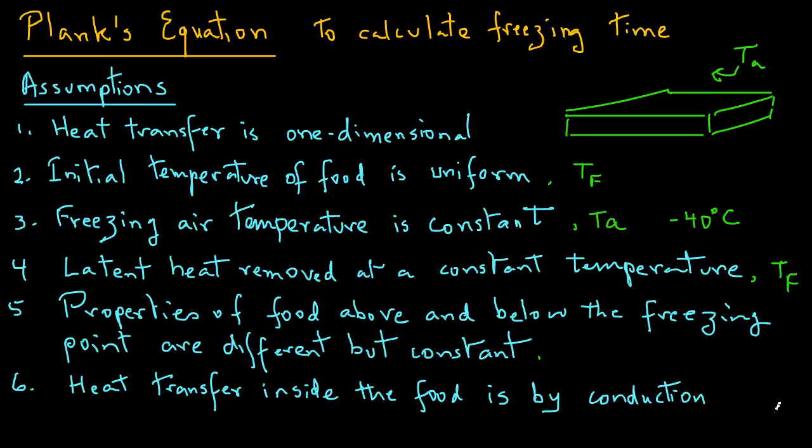Planck assumed that food is initially at a uniform temperature equivalent to its initial freezing point Tf. Therefore, the mathematical calculations will ignore any removal of sensible heat necessary to lower the temperature of a food from some ambient temperature to the initial freezing point. A one dimensional heat transfer implies that the object being frozen is an infinitely large slab — that is, only one dimension of the rectangular slab is fixed, while all other dimensions extend to infinity. This could represent, for example, liquid food poured into a wide, thin tray and then placed in a freezer.